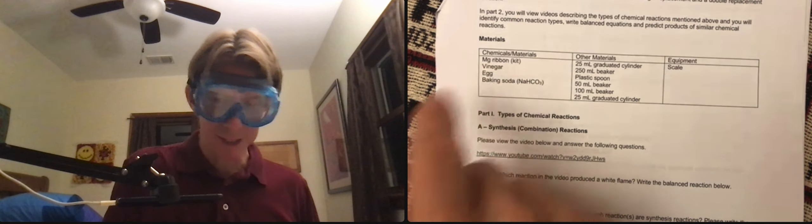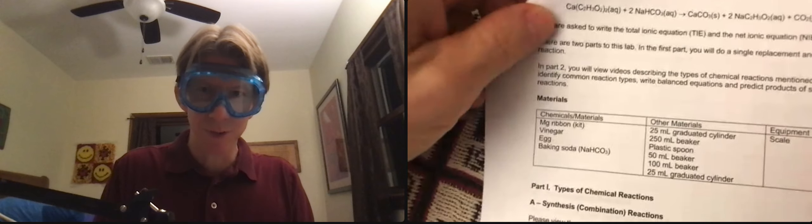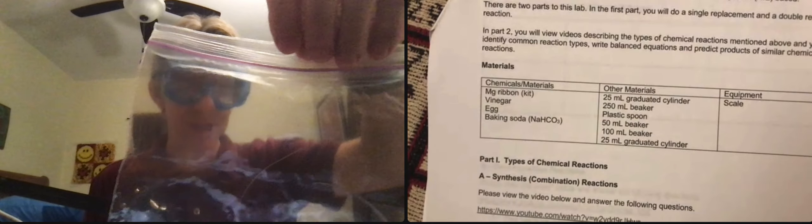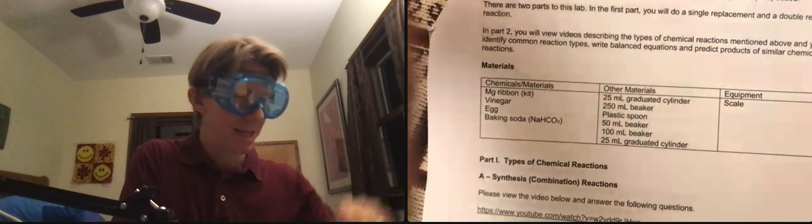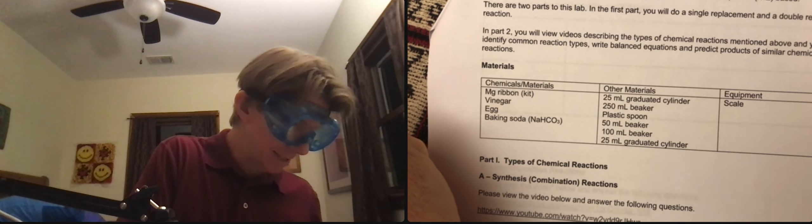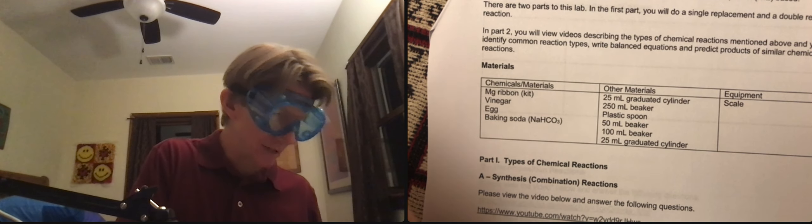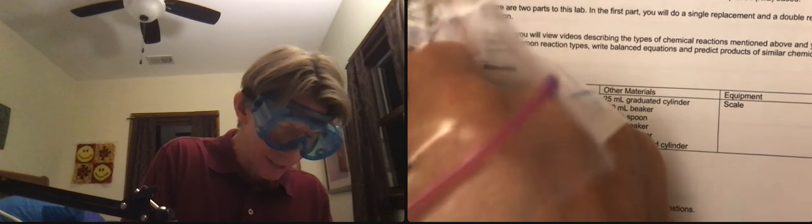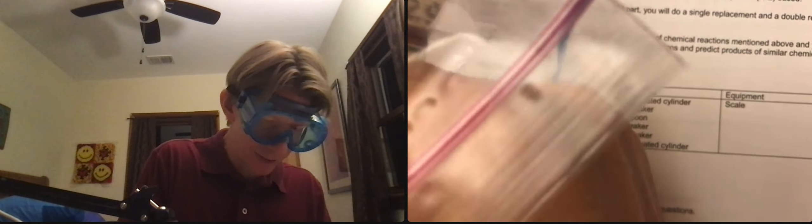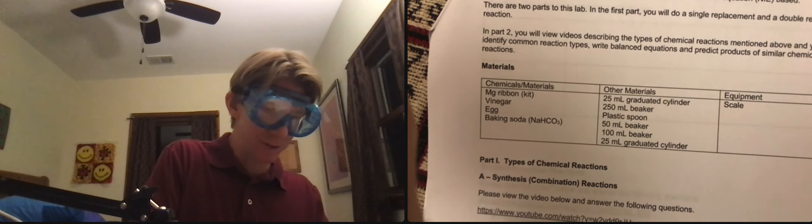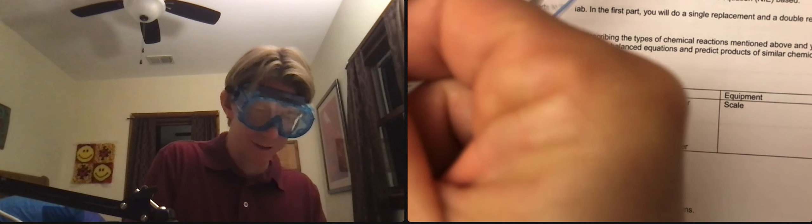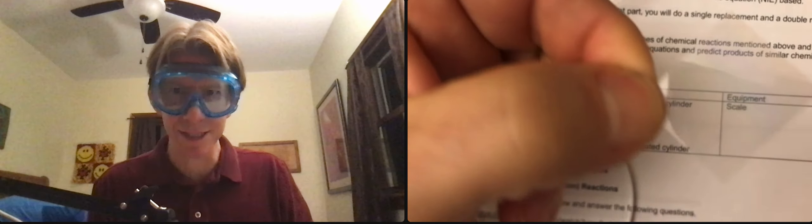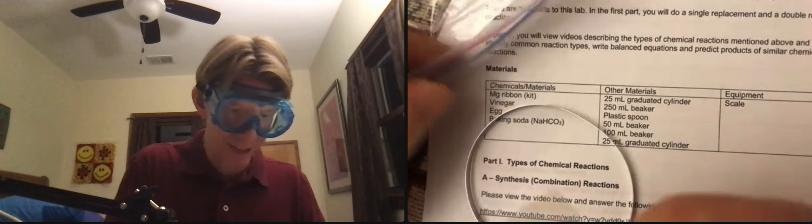The first thing on our material list is the magnesium ribbon, and that's in your kit. It comes in a plastic bag and this plastic bag has two things in it: the magnesium ribbon and a diffraction grating. The diffraction grating just looks like a little tiny square piece of plastic, and try not to touch it except at the very corner. Don't lose that because we'll need that for the next lab.